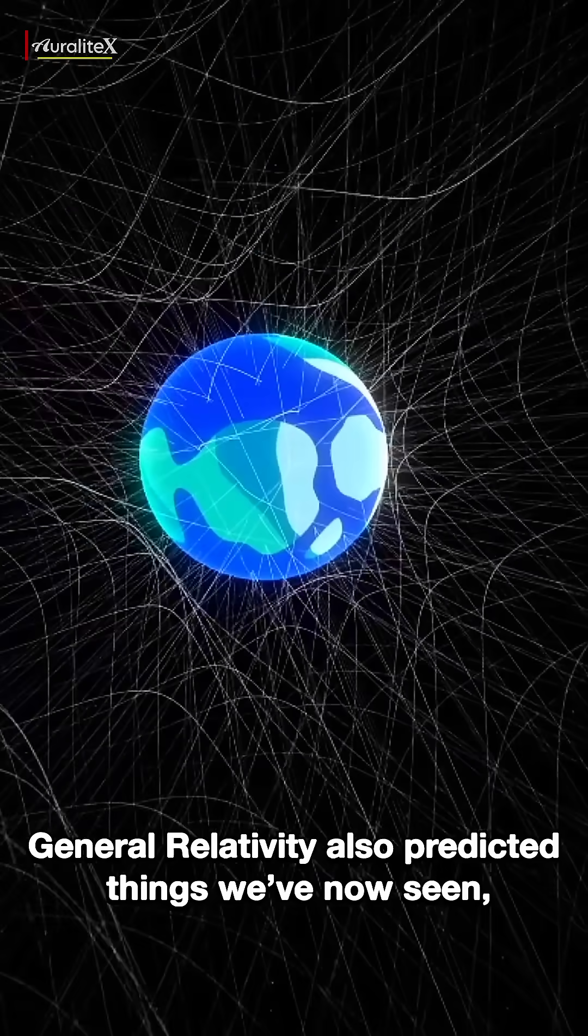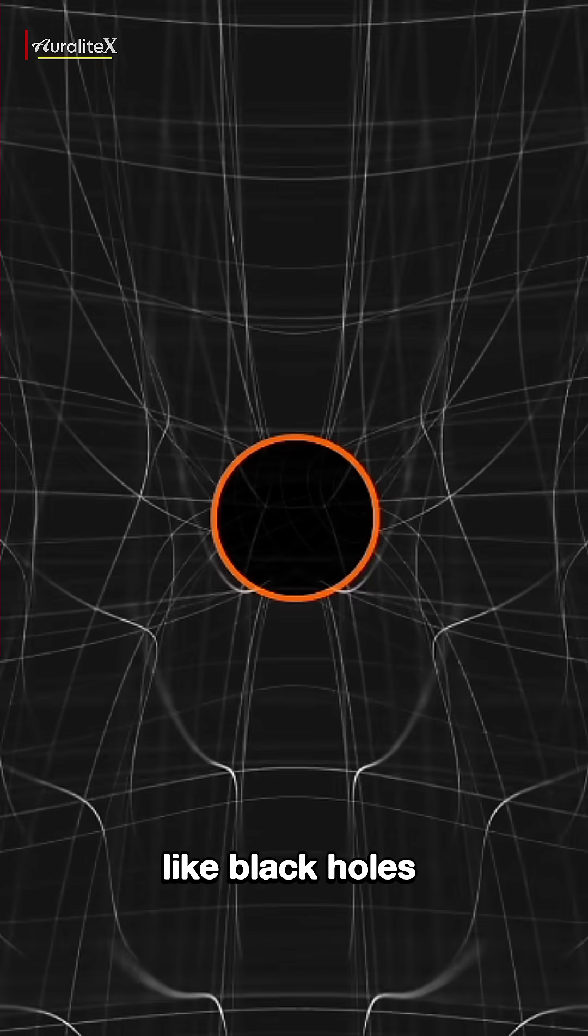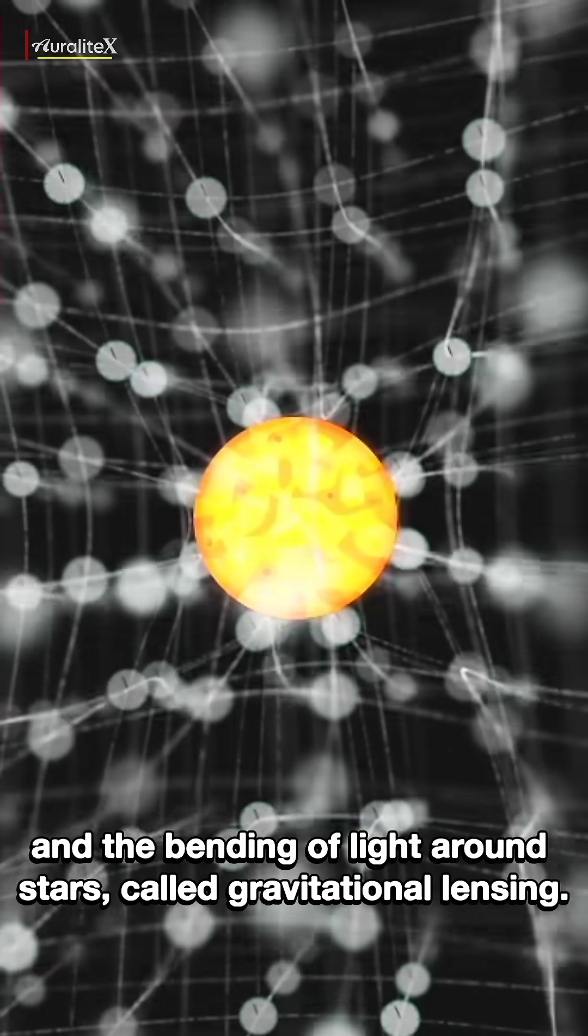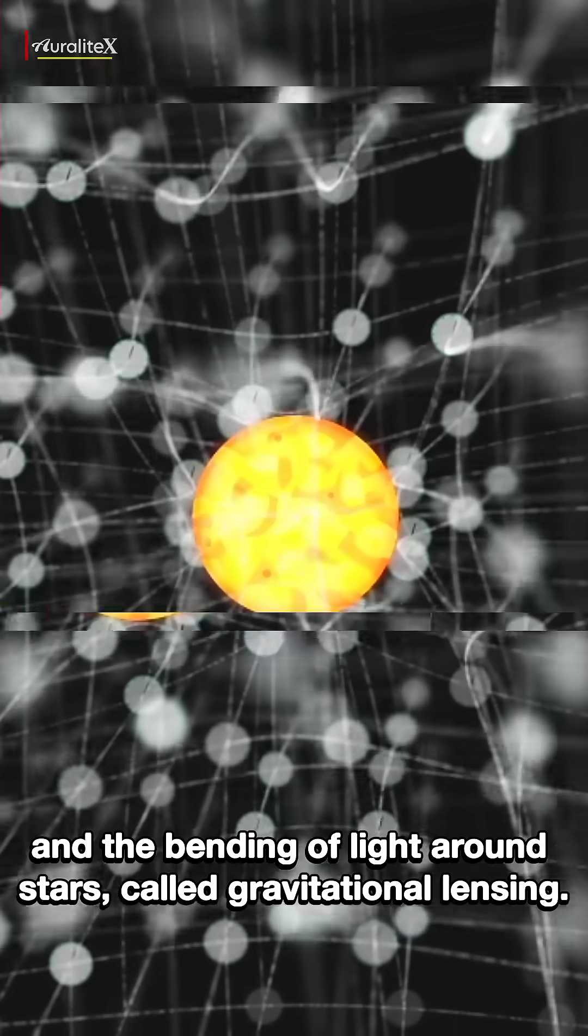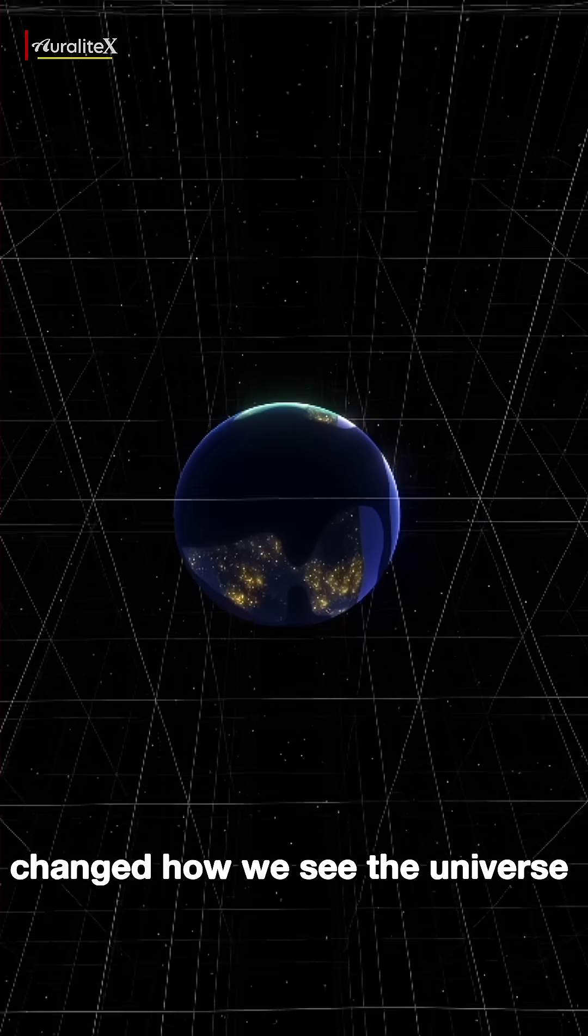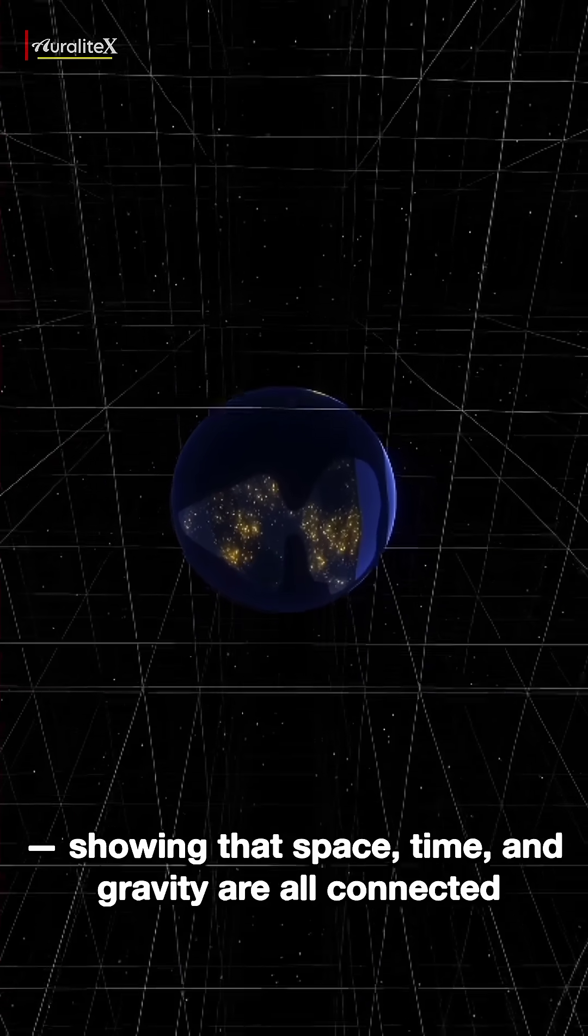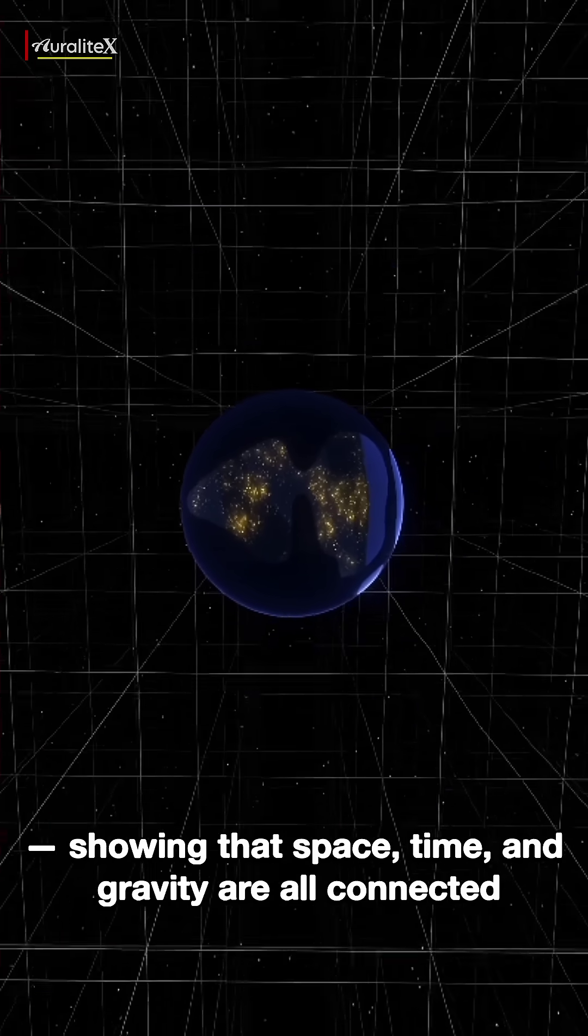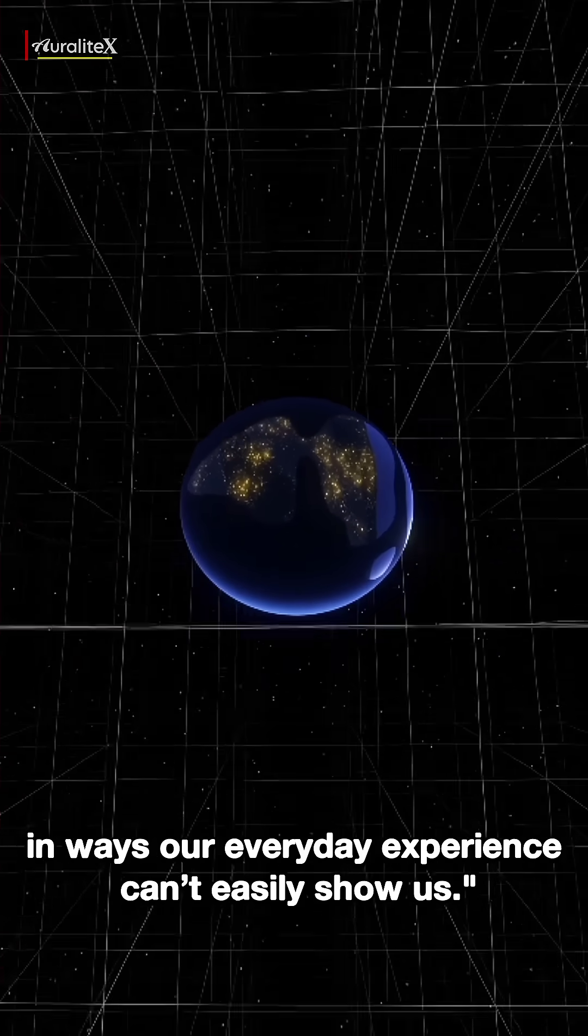General relativity also predicted things we've now seen, like black holes and the bending of light around stars, called gravitational lensing. In short, Einstein's theory of relativity changed how we see the universe, showing that space, time, and gravity are all connected in ways our everyday experience can't easily show us.